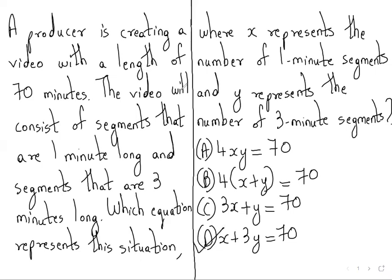So x plus 3y equals 70 — it is option B. I hope you understood this. If you like the video, kindly like, share, and subscribe. Thank you for watching.